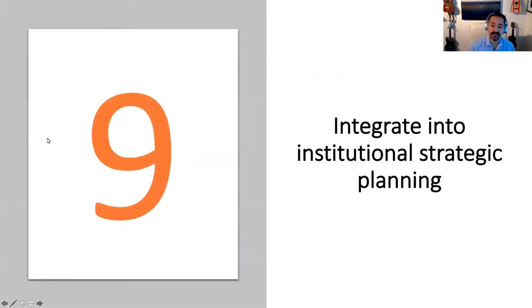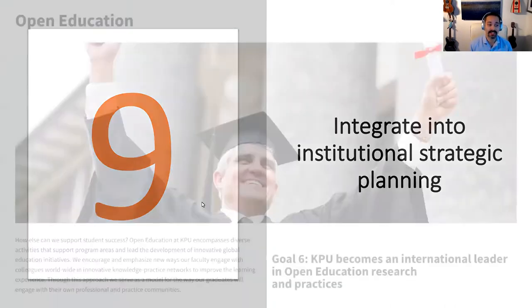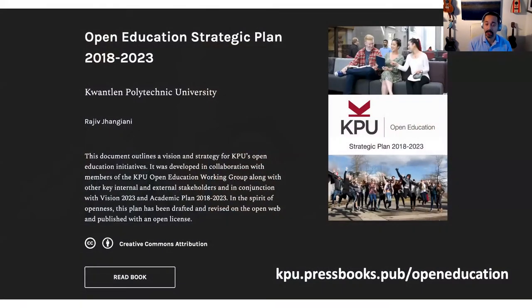Ninth, integrate support for open education into your institution's broader strategic planning. In most cases, institutional vision statements, academic plans, and other documents already have language that speaks indirectly to open education when they refer to access, student success, and pedagogical innovation. But push to take this further. At KPU, we have nine broad goals in our academic plan, and one of them centers on advancing work in open education. This goal in turn has a strategic plan to support it, including strategic and operational goals tracked over time — all necessary if you want your open education initiative to move from a passion project to an integrated and sustainable institutional strategy.